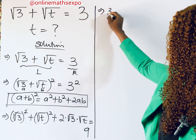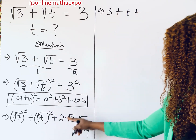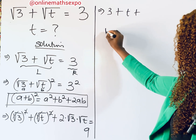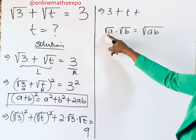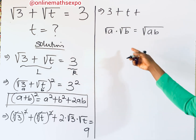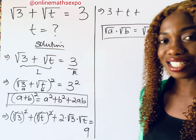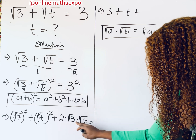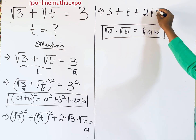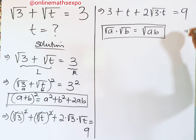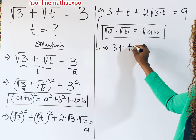Simplifying: the square cancels the square root giving us 3, and similarly for t. For the middle term, remember that root a multiplied by root b gives you root ab, provided the radicals are the same. So we can multiply the radicals to get plus 2 root(3t). This gives us 3 plus t plus 2 root(3t) is equal to 9.